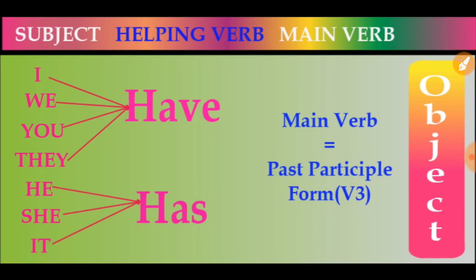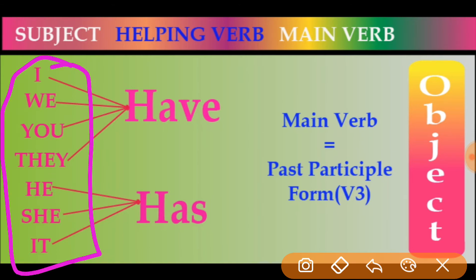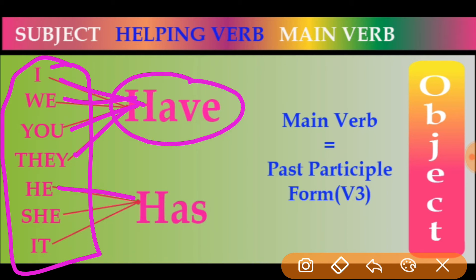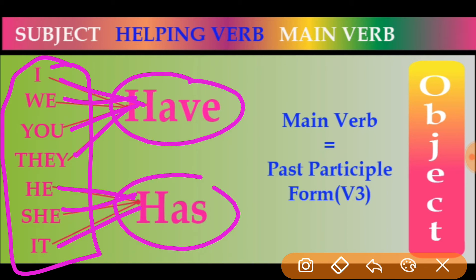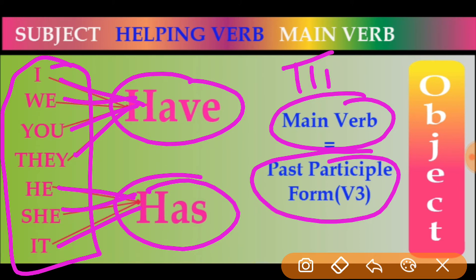Now see the structure: subject — helping verb — main verb. Subjects are I, we, you, they, he, she, it. With I, we, you, and they — use 'have.' With he, she, and it — use 'has.' The main verb is the past participle, that is the third form of the verb.